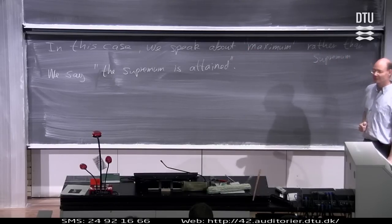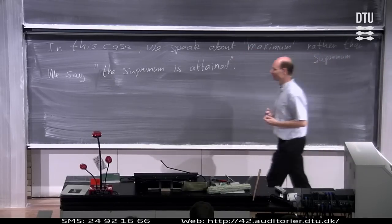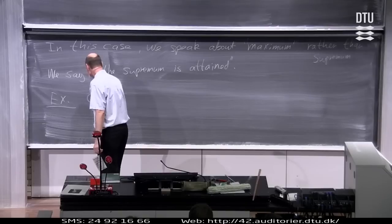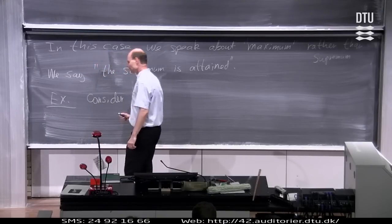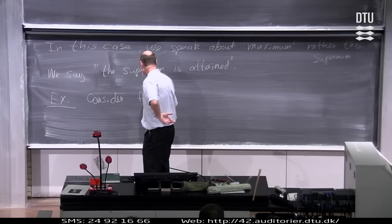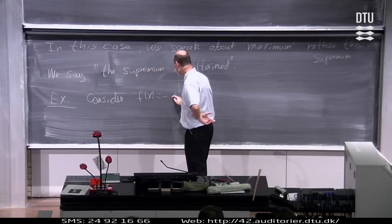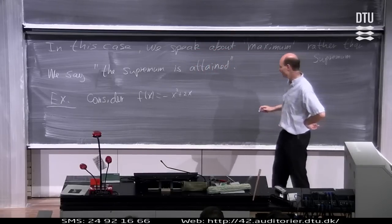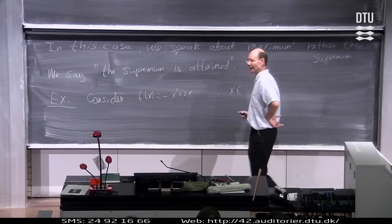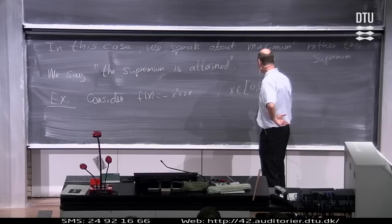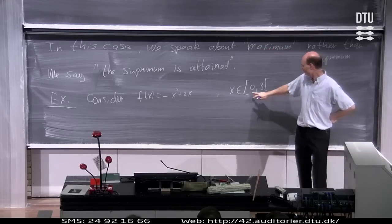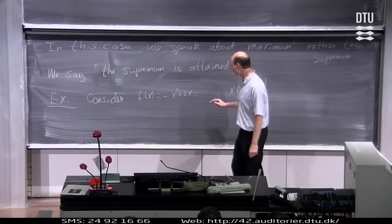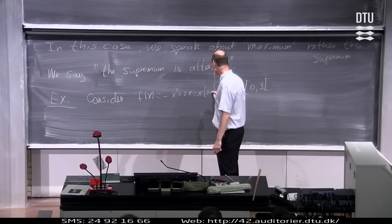This sounds very abstract, but it is much easier to understand with a concrete example. Let's take an elementary function: F of x equal to minus x squared plus 2x. Be careful with the domain — I say let's look at this function for x values belonging to the interval from 0 up to 3, where 0 is contained but 3 is not. You can write this in a different way as x times (2 minus x).